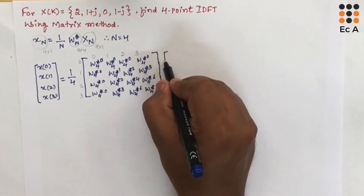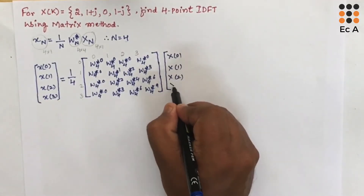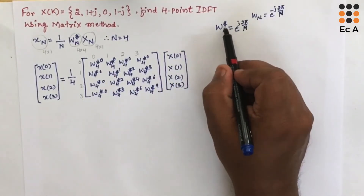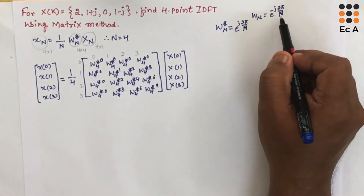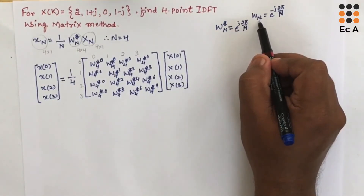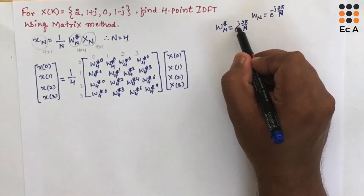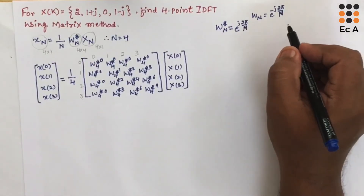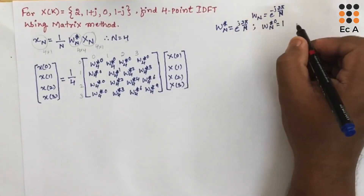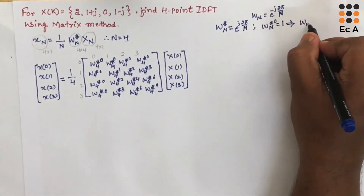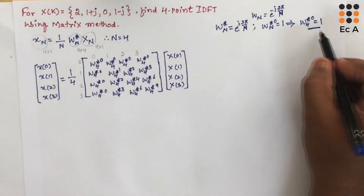The 4×1 input matrix contains x(0), x(1), x(2), x(3). We know that WN* = e^(j2π/N), since WN = e^(-j2π/N), making WN* its complex conjugate — the negative sign becomes positive. Also, WN*^0 = 1, so W4*^0 = 1 everywhere it appears in the matrix.